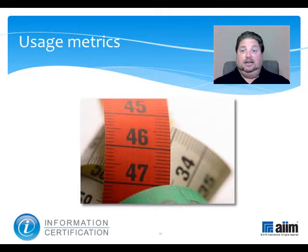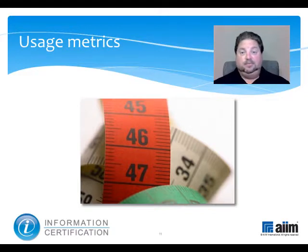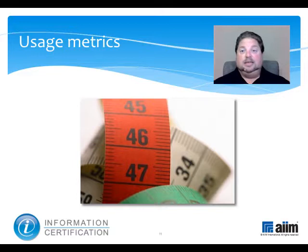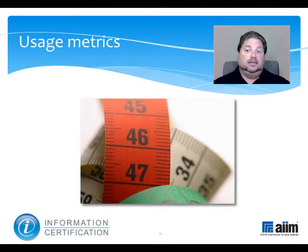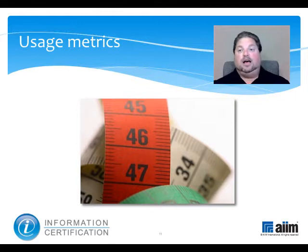Metrics are also key, for they provide the specifics you need to make sound decisions about your information management. System logs, email stamps, and file properties are simple and readily accessible sources of usage data that can tell you much about what happened, when, and who was involved as it relates to information flow.